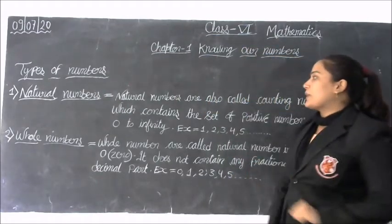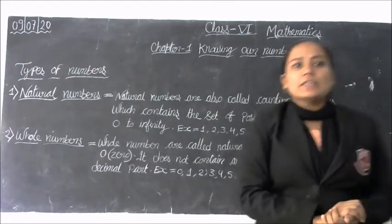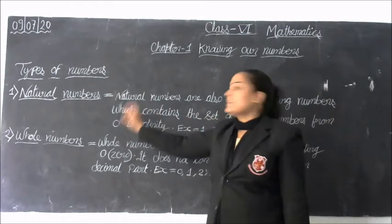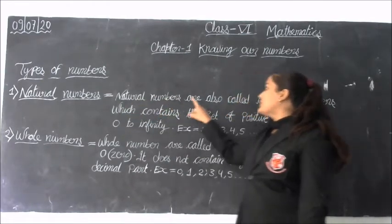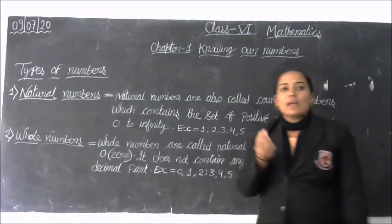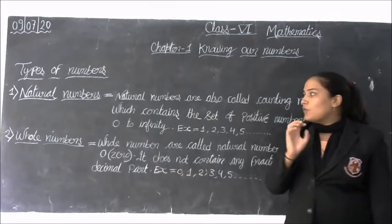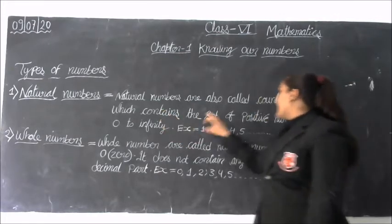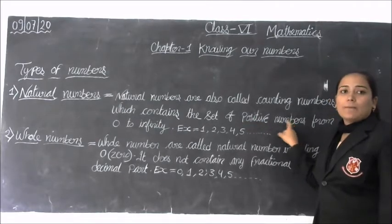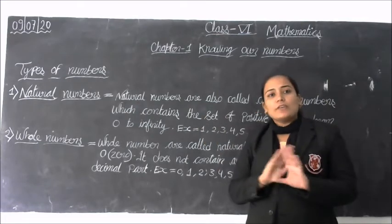First, we are going to study natural numbers. In previous class you also studied about natural numbers. What are natural numbers? Natural numbers are also called counting numbers. Counting numbers means we count: 1, 2, 3, 4 and so on, which contain the set of positive numbers. Positive numbers means the natural numbers are always positive.